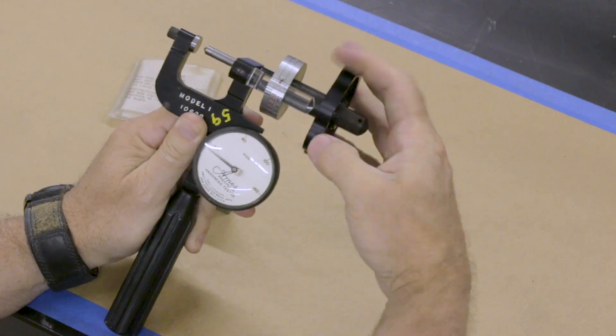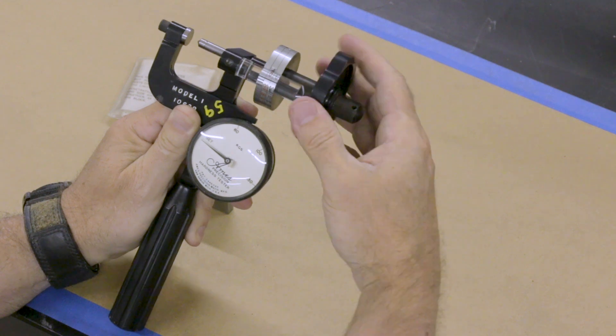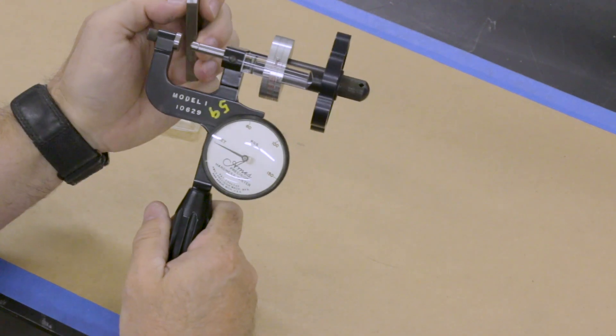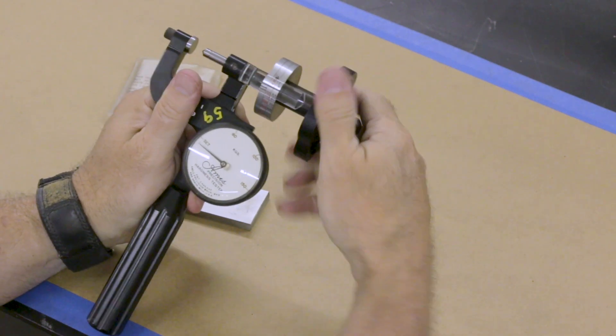Now this particular tester can test a one inch range. So it's kind of like a micrometer, it tests the zero to one inch range. And that's not open enough yet, so we'll keep going.